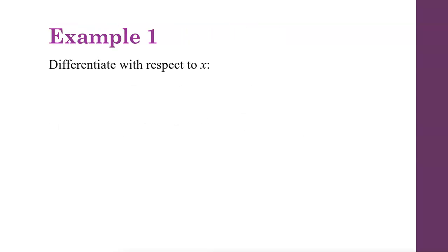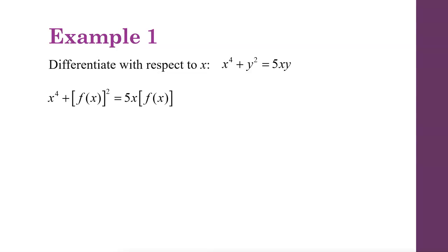Let's consider an example. We want to differentiate with respect to x, which means x is going to be our independent variable, and the function we're going to take a derivative of is x squared plus y squared equals 5xy. Since we're taking the derivative with respect to x, we are going to think of y as being a function of x, and then go ahead and take the derivative. The derivative of x to the fourth will be 4x cubed.